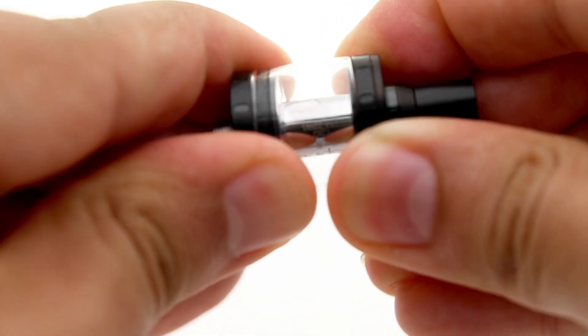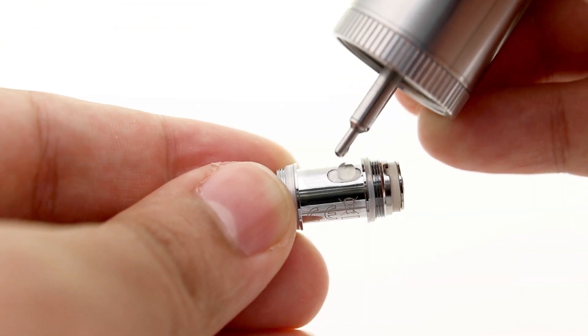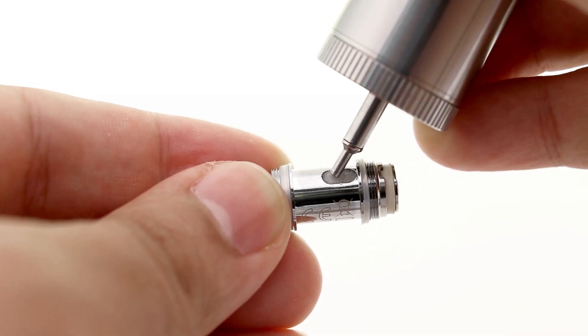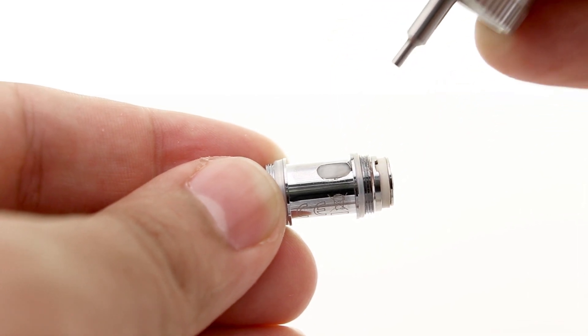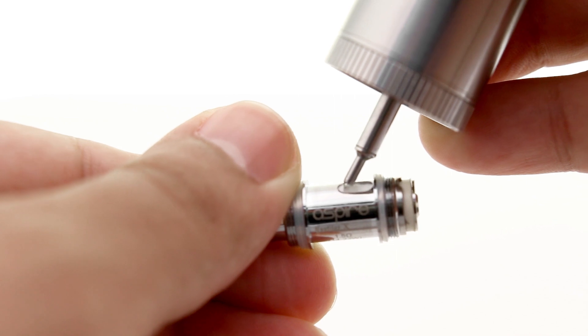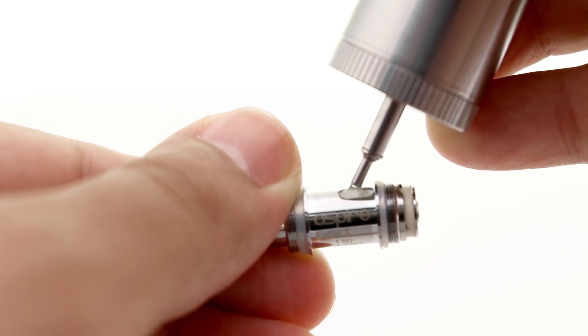It's important to prime the coils before you fill up the tank with liquid. When I prime the coils, I like to apply just a little bit of liquid at a time on the wicking slots until it's fully absorbed into the cotton. Do this repeatedly on both sides until the coil has absorbed a good amount of liquid.